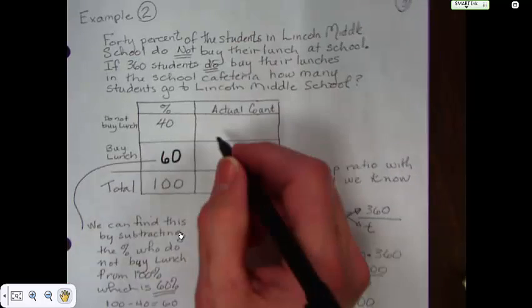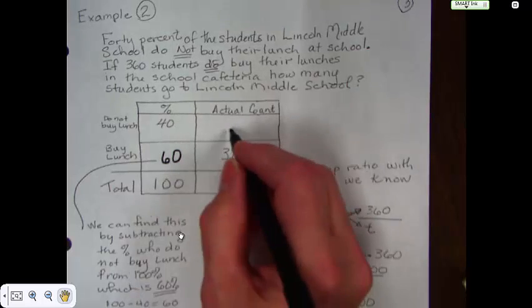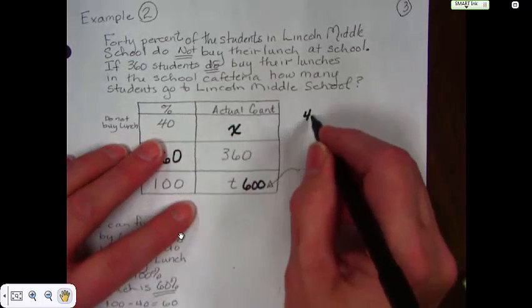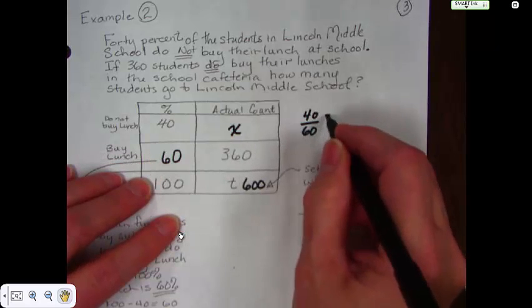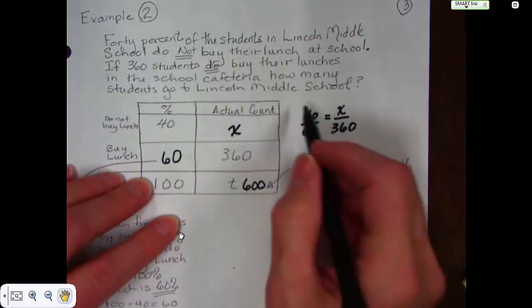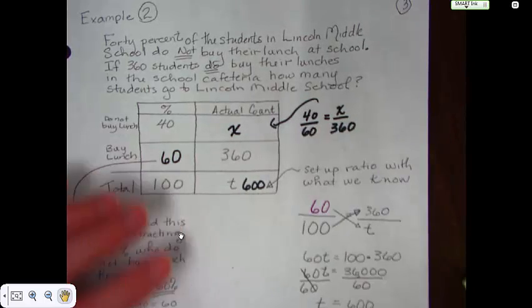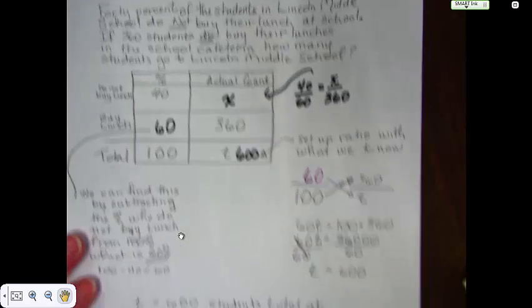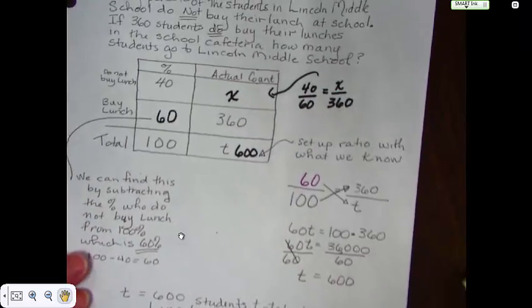In other words, what I'm saying is you could put a number in for here. Let's just make this x. And you could write this as 40 over 60 equals x over 360. And then you could solve and find that x as well. But we were looking for, and the question asked for the total number of students. So that's why I went the route that I did.